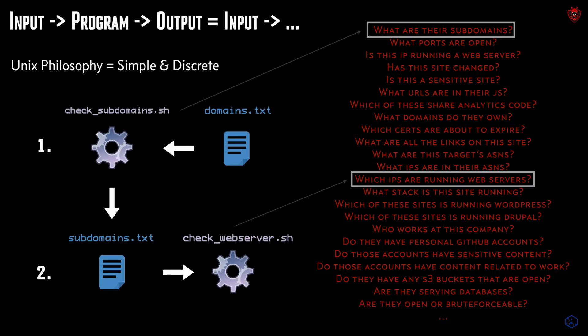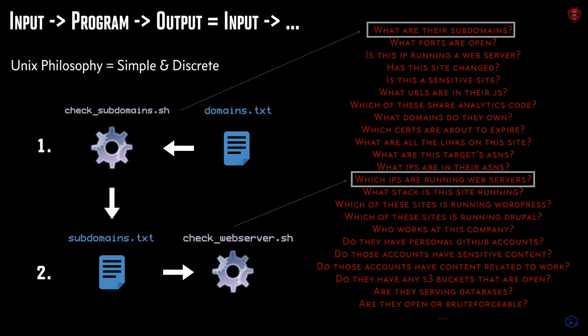That brings us to having specific discrete questions being answered by a specific piece of code. In this case, we have two questions: 'What are their subdomains?' — which is captured in checksubdomains.sh — and 'Which of their subdomains are running web servers?' — which is captured in checkwebserver.sh. So that's what I'm going to talk about today: a way to ask lots of different security questions continuously and then do fun things with those answers.